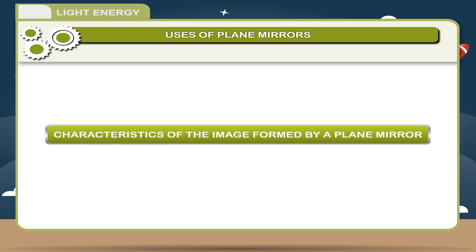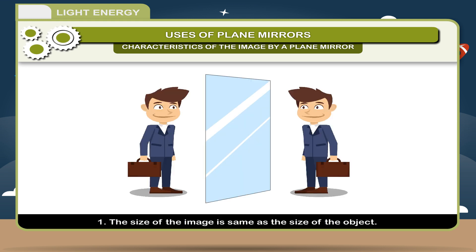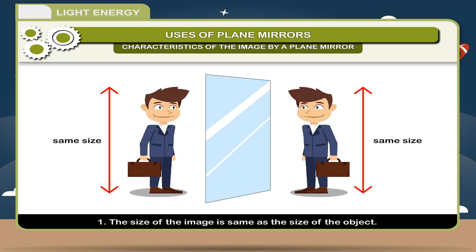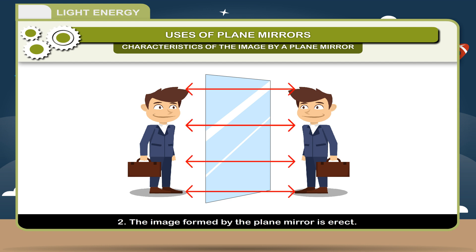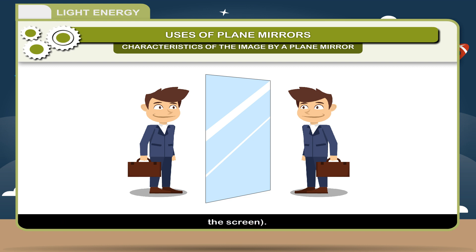Characteristics of the Image Formed by a Plane Mirror: The size of the image is the same as the size of the object. The image formed by the plane mirror is erect. The image formed by a plane mirror is a virtual image which cannot be taken on the screen.